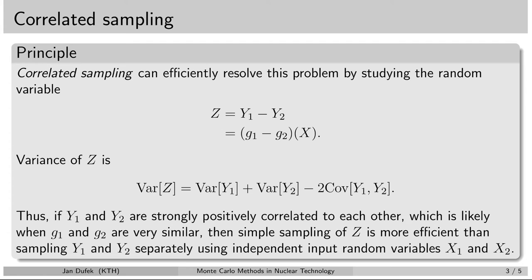You may remember that we were doing very similar things when we were discussing the control variate method. In the case of the control variate method we also calculated the difference between the original system and the control variate, and we were sampling the differences. So when we want to calculate the variance of this difference, we can use the results that we already obtained in the previous lesson — we were calculating the variance of the difference of two random variables, so we can directly take that result and apply it here.